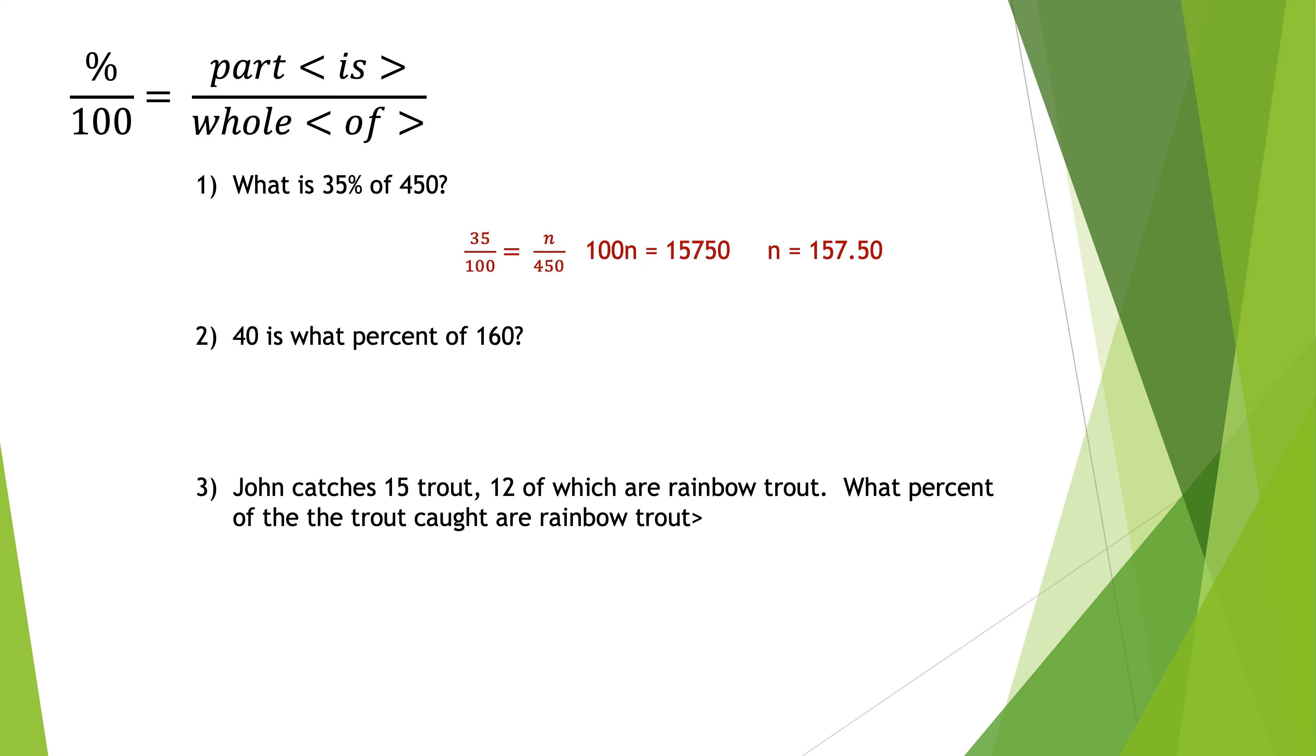Set up my proportion. Percent over 100 equals part over whole. This one says 40 is. So that goes in the top part because that's the part out of the whole of 160. So the 40 is goes in the top. Out of the whole of 160 goes in the bottom. And then the N, it says what percent. So I put the N in the percent place. Cross multiply. 160N equals 4,000. Dividing both sides by 160, I get N is 25.